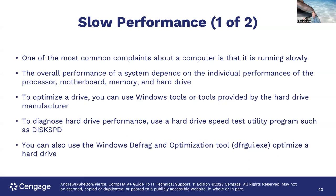To optimize the drive, use Windows tools or tools provided by the hard drive manufacturer. Diagnose hard drive performance using a speed test utility such as Disk Speed. Use the Windows Defrag and Optimization tool to optimize the hard drive — note that defragmentation is not for SSDs. Also, if your system is running slowly, check if your memory is maxed out — if you're pegging out your memory, you'll be swapping to virtual memory on disk, which can cause performance issues that mimic hard drive problems.